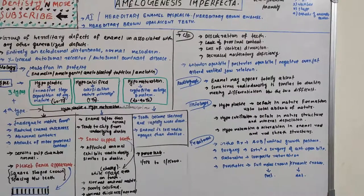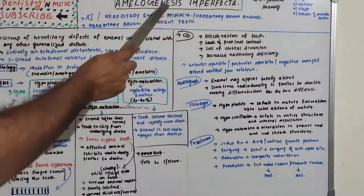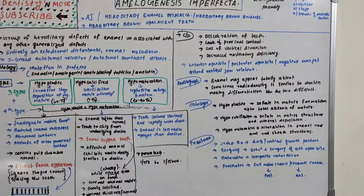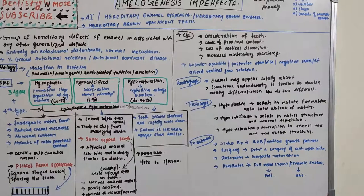The name 'Amelogenesis Imperfecta' itself gives a clue about this problem — imperfect genesis of ameloblasts. Genesis means creation, and ameloblasts give rise to enamel. So there is imperfect production of ameloblasts, or the ameloblasts are not working perfectly. This is a problem associated with ameloblasts, meaning enamel is not forming properly — imperfect formation of enamel.